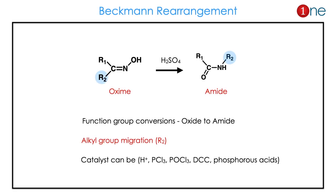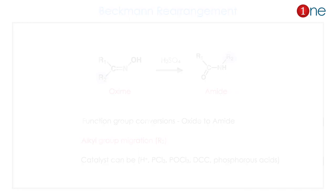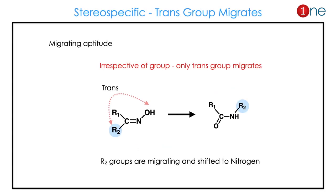What is Beckmann rearrangement? In simple terms, it's a conversion of an oxime to an amine. Basically, what really happens is migration of an alkyl group — the R2 group migrates and forms the amine. The catalyst can be an acid: Lewis acid or Brønsted acid, most commonly H+. The reaction is very stereospecific. The trans group always migrates — the group trans to the leaving group migrates irrespective of anything. Only the trans-positioned group migrates, moving from the carbon to the nitrogen.